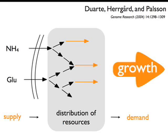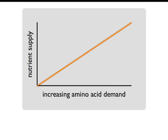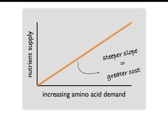In more detail, there are input reactions into the model such as the influx of ammonia and glucose, and then you get a distribution of resources through the metabolic network, followed by the production of biomass or growth. So you have supply of resources, distribution of resources in the model, and then a demand for these resources in growth. Using this model we estimate the cost of amino acids. We increased the demand for an amino acid in the model and looked at how this affects the supply of nutrients. As you would expect, with increasing amino acid demand there is an increasing demand for nutrient supply, and the slope between demand and supply is the cost — the steeper the slope, the greater the cost of the amino acid.